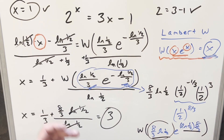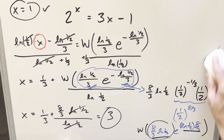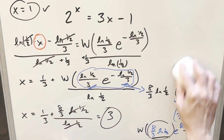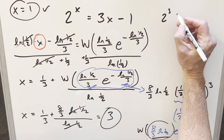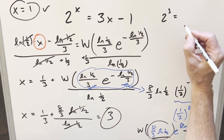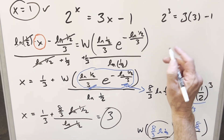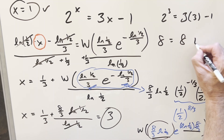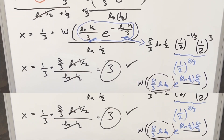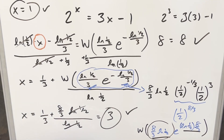Eight-thirds plus one-third equals nine-thirds, or just 3. So x = 3. Let's check: plug in x = 3. We get 2 cubed on the left side. On the right, 3·3 − 1 = 8. Two cubed is 8, nine minus one is 8 — this looks good. We have our second solution. So there you go: two solutions for this equation, x = 1 and x = 3.